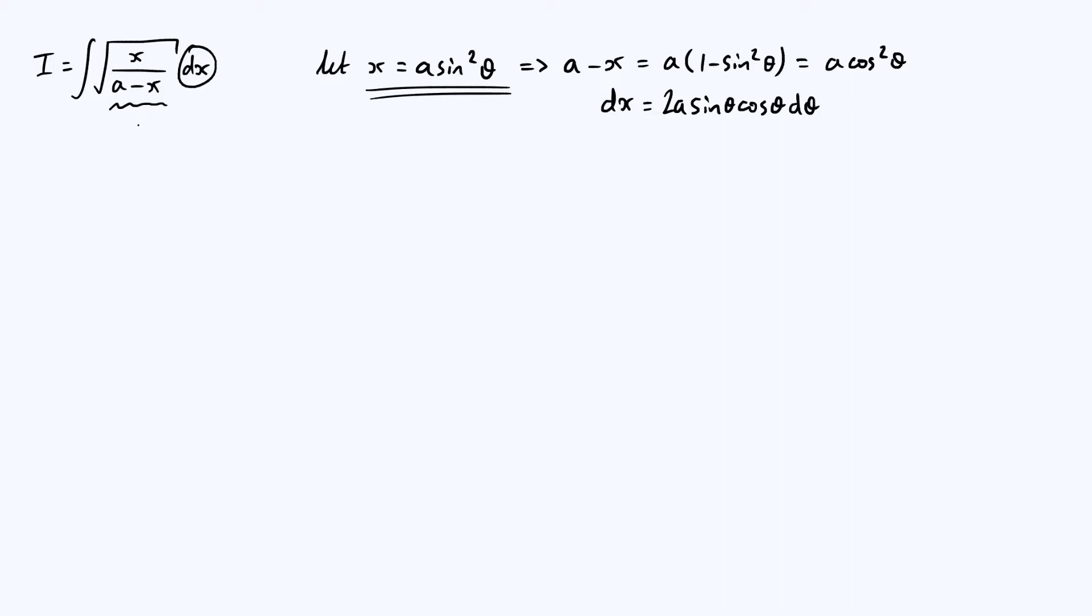Alright, so now we're in a position where we can just do all those substitutions and see what happens. So our integral is the integral of the square root of a sine squared theta over a cos squared theta, and our dx turns into 2a sine theta cos theta d theta.